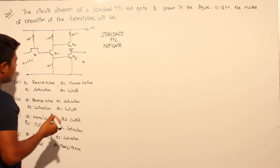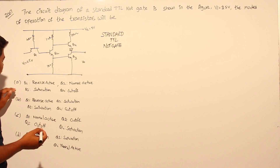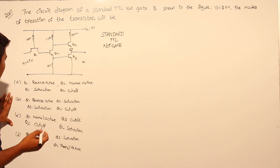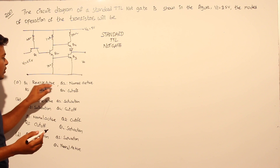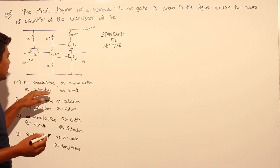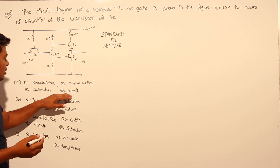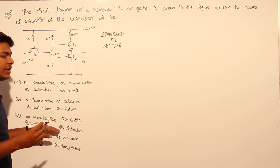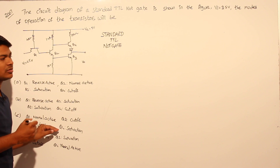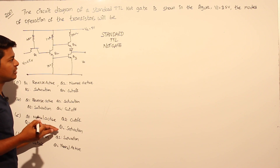Four options are given. For Q1, the choices include reverse active, normal active, saturation, and cutoff — with different combinations provided for Q2, Q3, and Q4 as well.